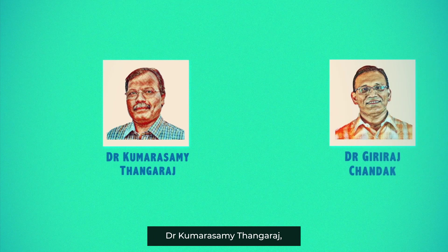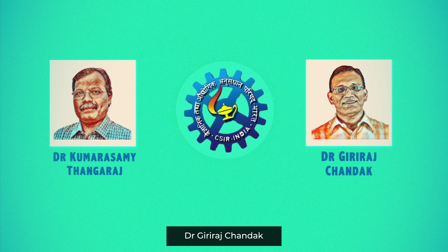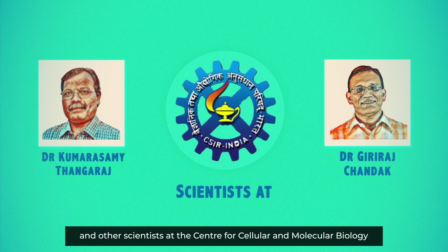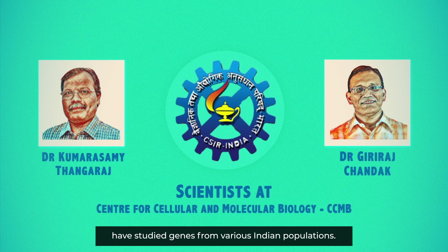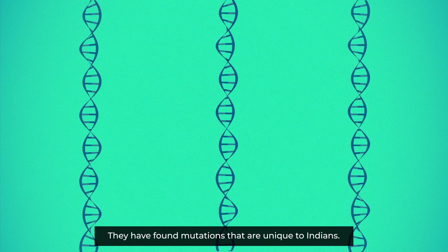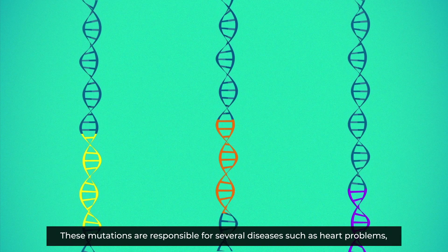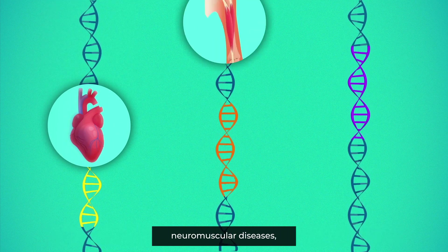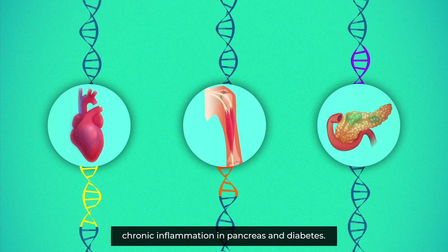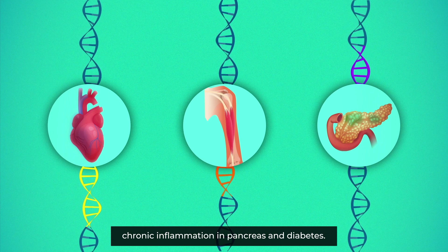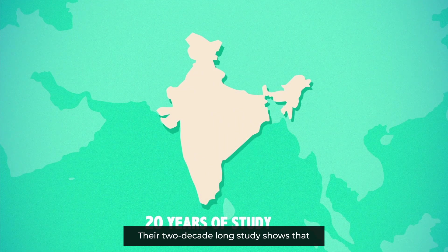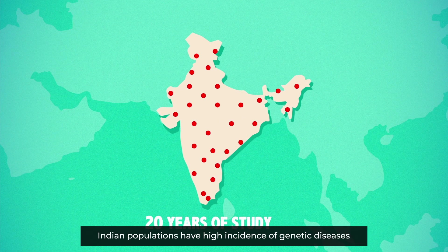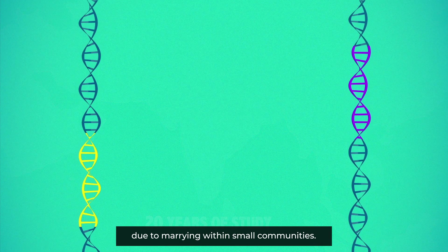Dr. Kumarasamy Tangharaj, Dr. Giraj Chandak, and other scientists at the Centre for Cellular and Molecular Biology have studied genes from various Indian populations. They have found mutations unique to Indians, responsible for several diseases such as heart problems, neuromuscular diseases, chronic inflammation in the pancreas, and diabetes. Their two-decade-long study shows that Indian populations have a high incidence of genetic diseases due to marrying within small communities.